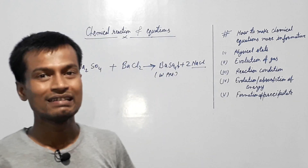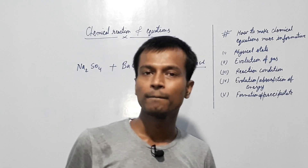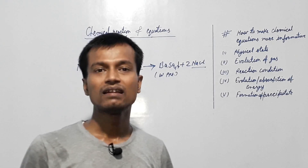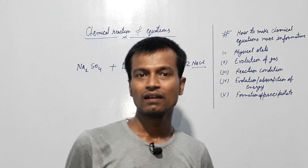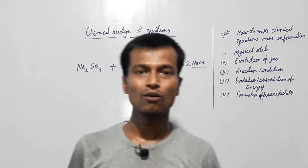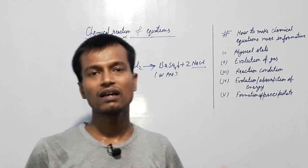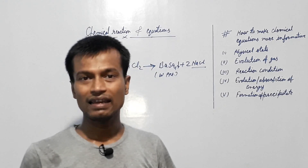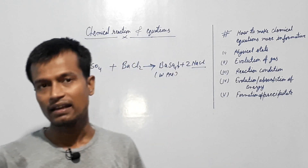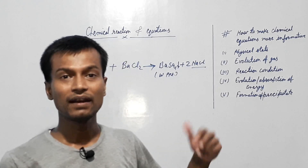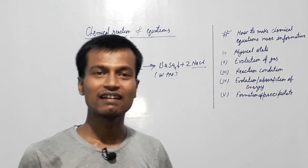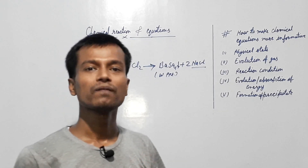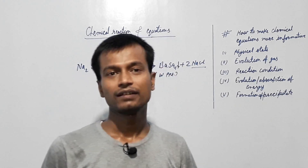So these were the topics through which we can make our chemical equations more informative, and these are very important for this chapter. In the next class, we will study types of chemical reactions: combination, decomposition (thermal decomposition, electric decomposition/electrolysis, photochemical decomposition), displacement reaction, double displacement reaction, endothermic reaction, exothermic reaction, oxidation, reduction, and redox reactions. Thank you.